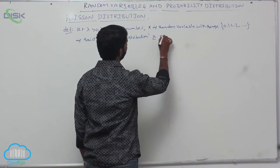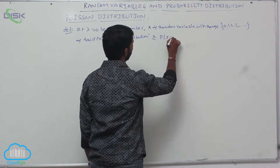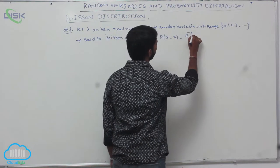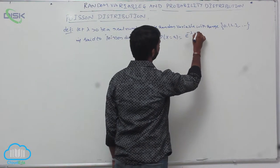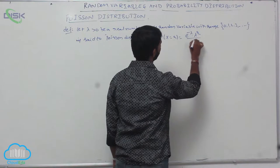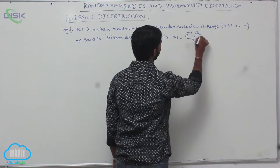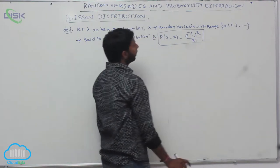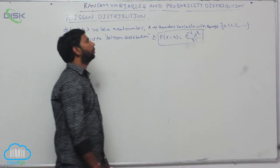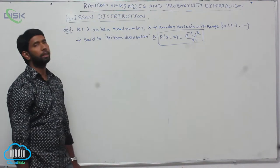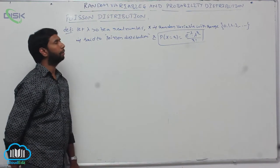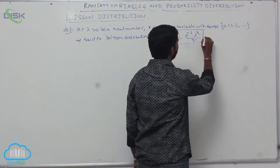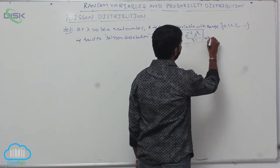P of X equals R is equal to e to the power minus lambda, multiplied by lambda to the power R, divided by R factorial, where lambda is a parameter.